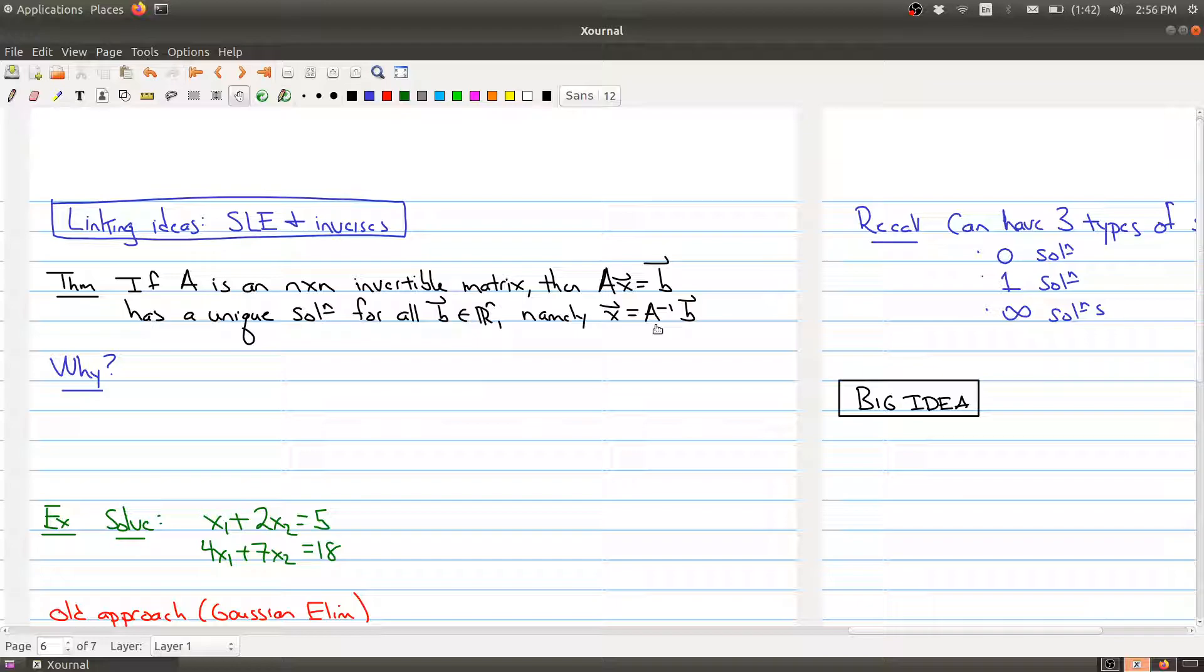Why is this true? Well, let's just walk through what happens if we set x equal to A inverse b in this equation. If we let x equal A inverse b, then what we have is A times A inverse times b. It's the same thing as regrouping the parentheses. So we have A times A inverse times b.